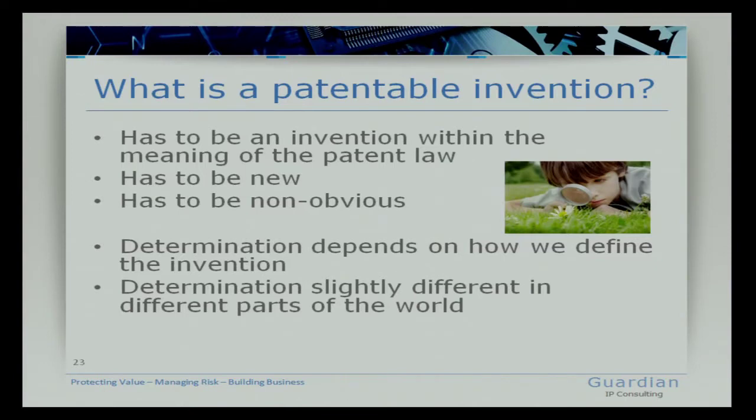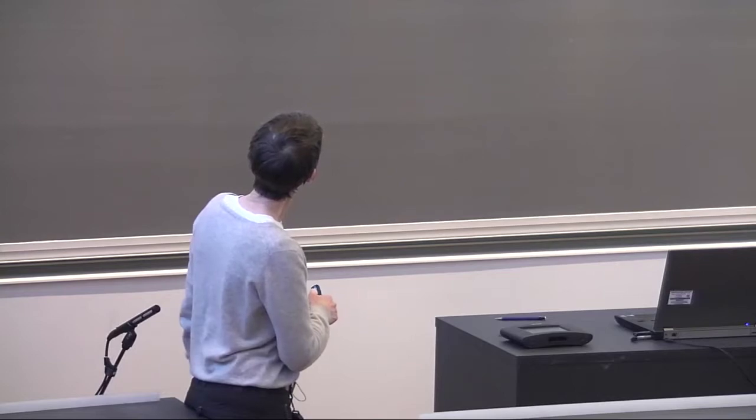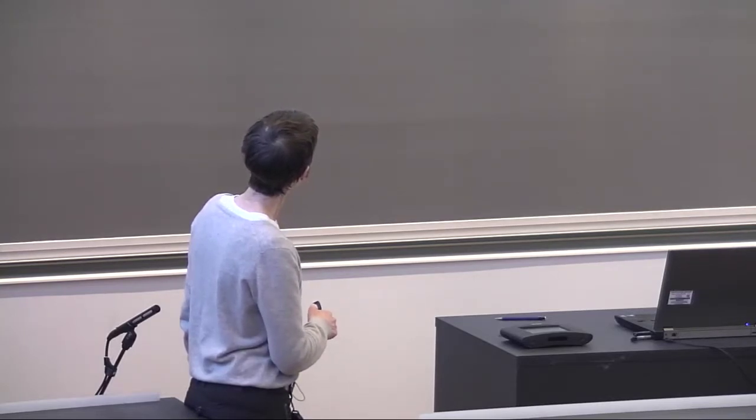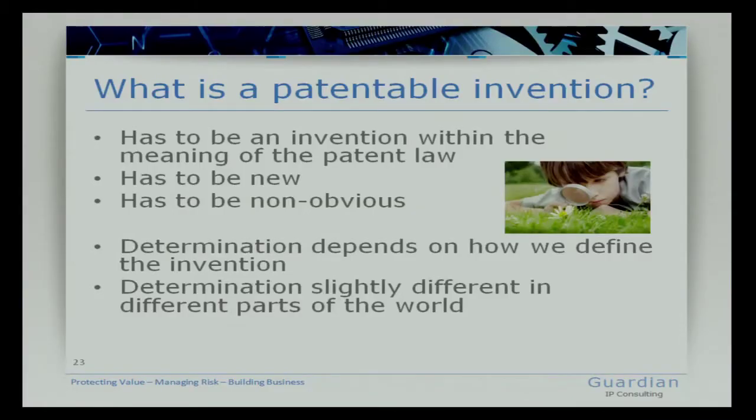Okay, so in the last 20-25 minutes we established that a patentable invention has to be an invention within the meaning of patent law. That means it has to have a technical content, and we've talked about why an algorithm is not patentable and why the use of it in a technical context to achieve a technical effect would be patentable. It has to be new, it has to be non-obvious, and the determination of this depends on how we define the invention.